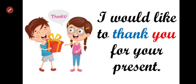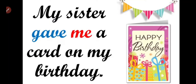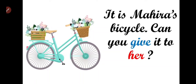I would like to thank you for your presence. The action is thanking, and the one affected is the second person, so 'you' is the object pronoun. Next: my sister gave me a card on my birthday. Here, 'gave' is the verb and 'me' is the object pronoun — me is receiving the action. Next: it is Mira's bicycle — can you give it to her? Mira is a girl, so we use 'she' as the subject pronoun and 'her' as the object pronoun.